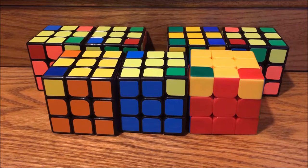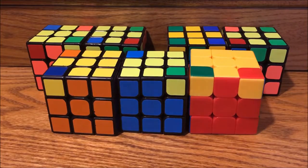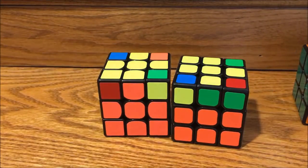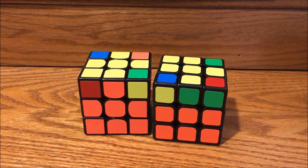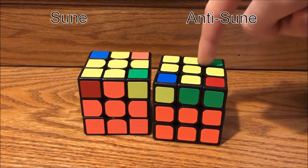There are 7 total cases, which I've divided up into 3 groups. We'll start by looking at the first group, the cases with only one corner oriented. This group is called the sune group because it has 2 cases, sune and anti-sune.